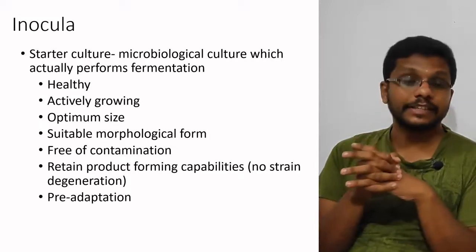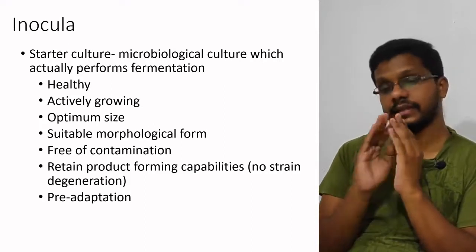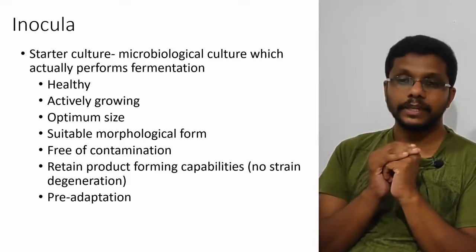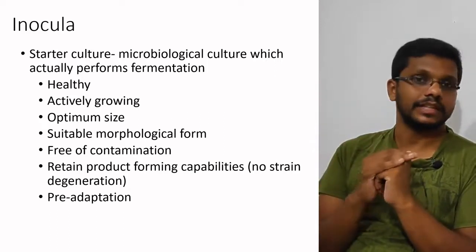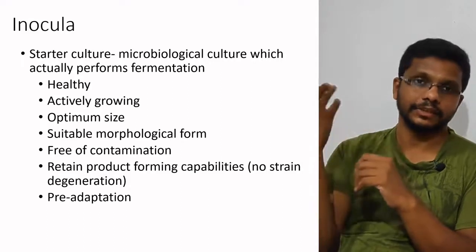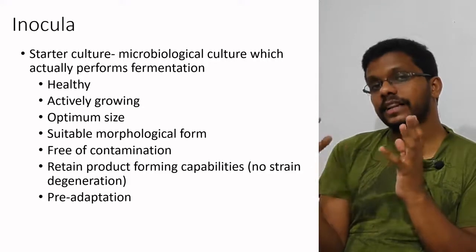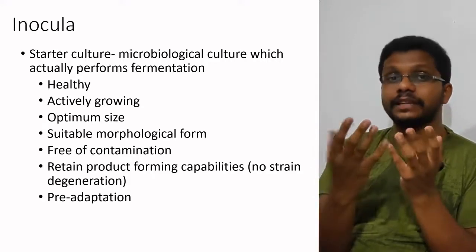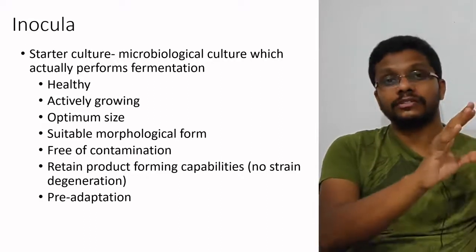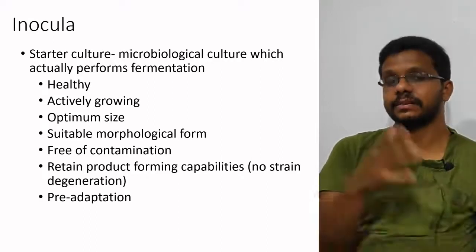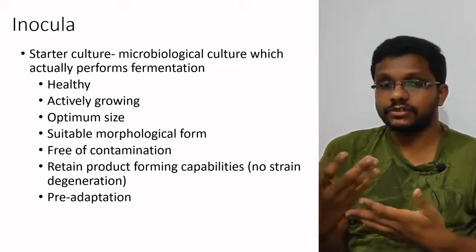Another parameter is pre-adaptation. In order to minimize the lag phase and adapting phase of microbial growth, the inoculum should be pre-adapted to the fermenter conditions — temperature, pH, and nutritional conditions used in the fermenter. The medium used for inoculum development will have the same features as the production fermenter so that the bacteria get used to the conditions and will grow faster.